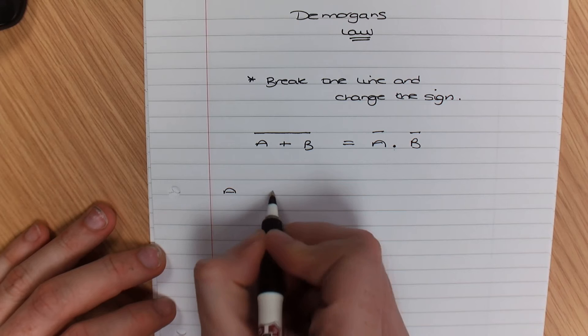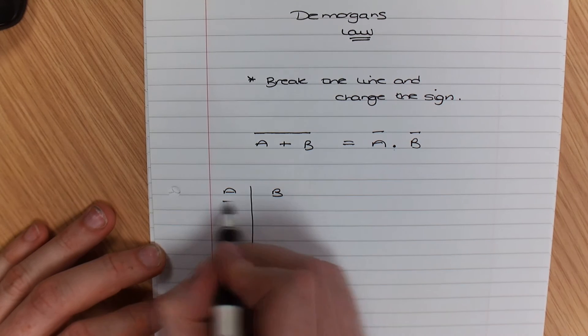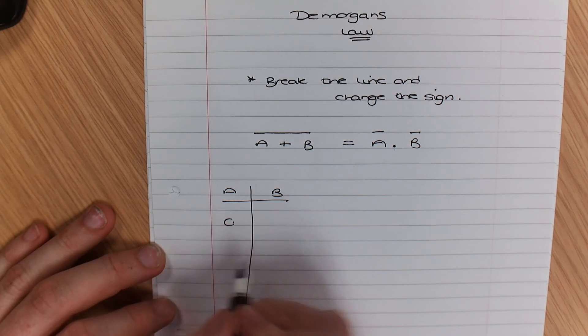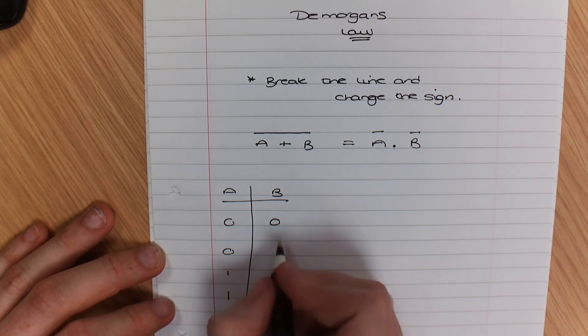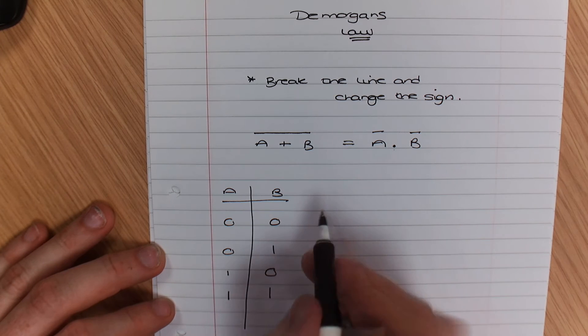We've got A, B, so I'm just going to write this down here. We've got 0, 0, 1, 1, and then you've got 0, 1, 0, 1.